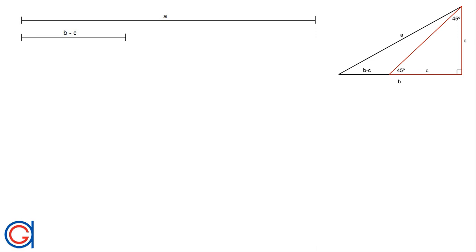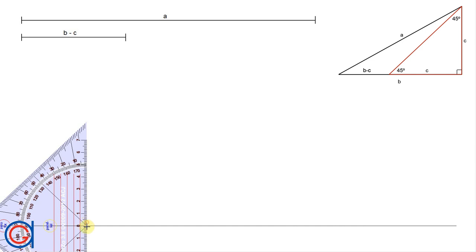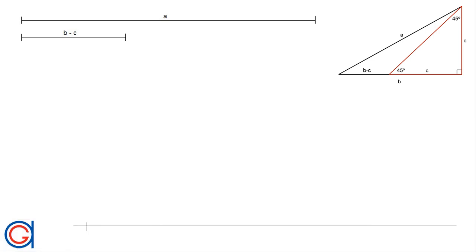So the first step is to draw a horizontal line at the bottom of the screen. And on the left side of this horizontal line we are going to mark our first vertex of the triangle which we will call C.